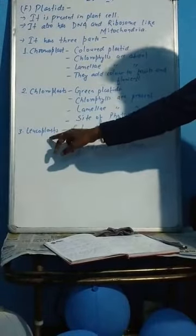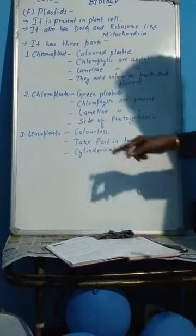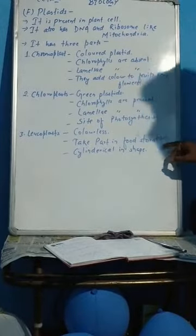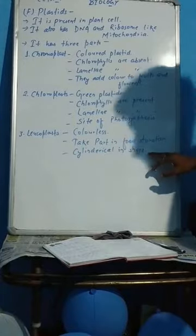And the third type of plastid is leucoplast. Leucoplast is colorless. It is not colored. It takes part in food storage. That means it helps in food storage. And the shape is cylindrical.